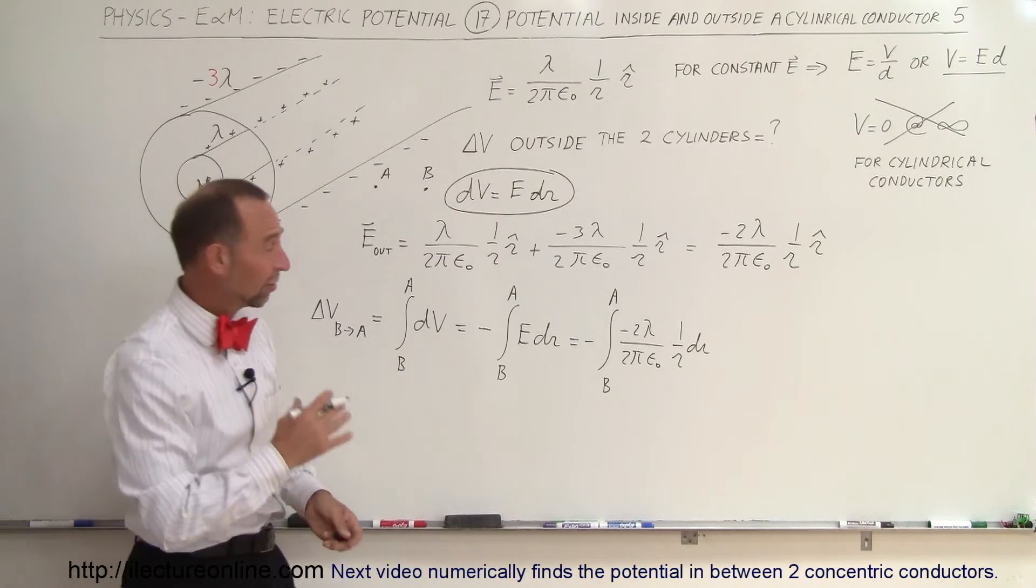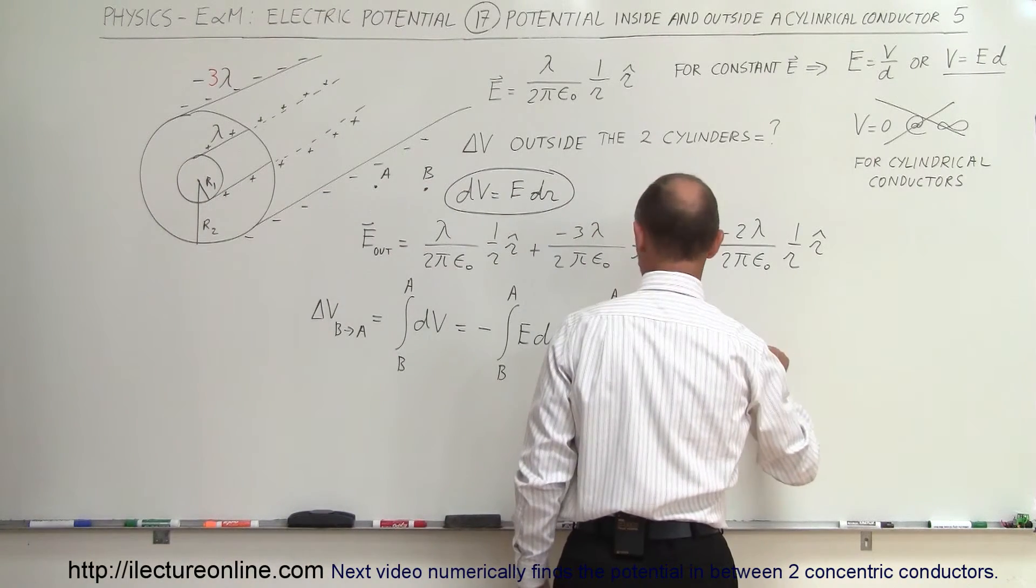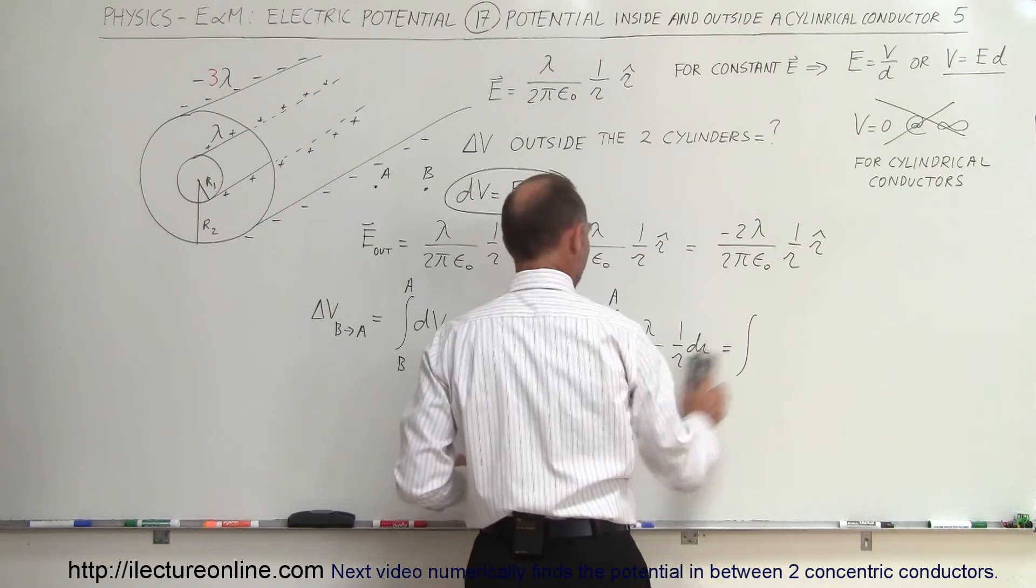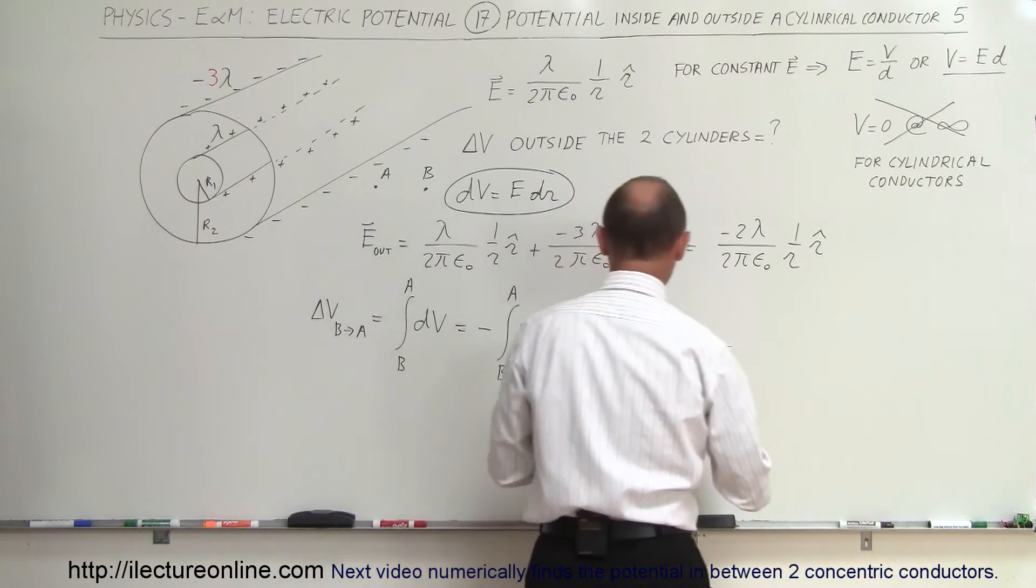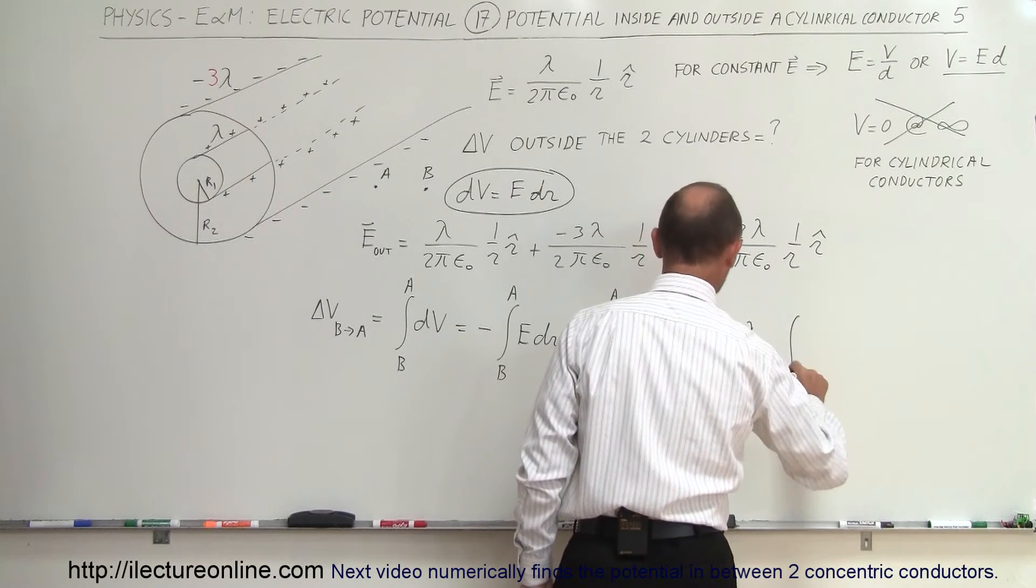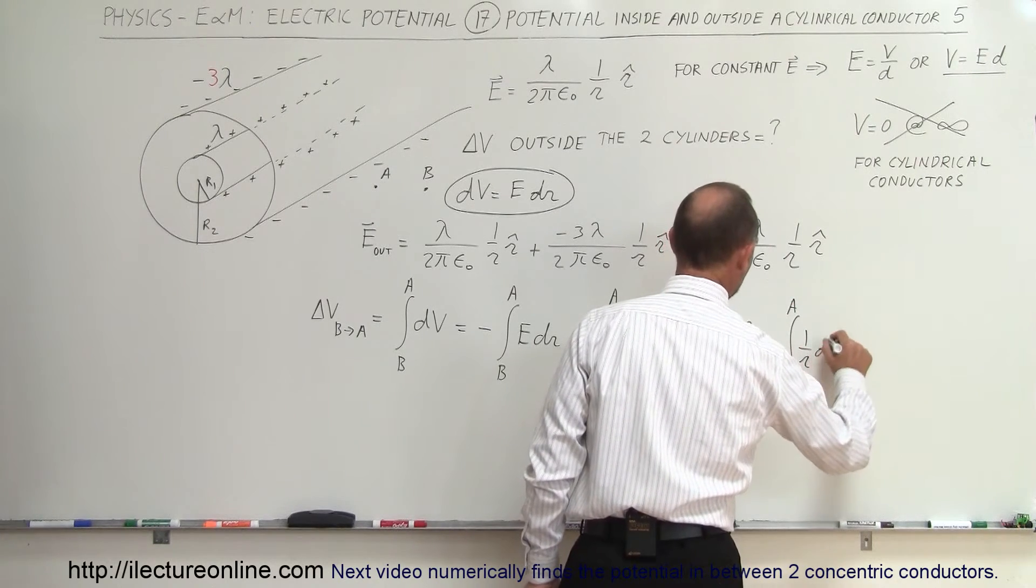We take all the constants and move them outside, and the 2's will cancel. So this is equal to the integral of... I didn't take my constants out. Let me do that. So the 2's cancel. It would be λ divided by πε₀ times the integral from B to A of 1 over r dr.